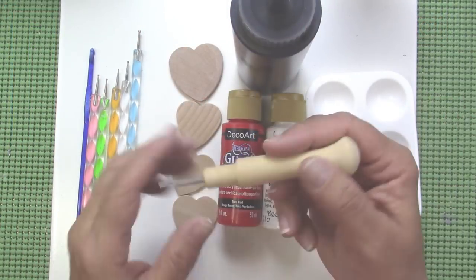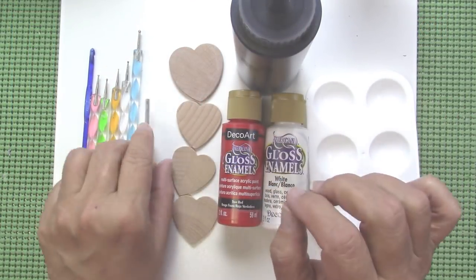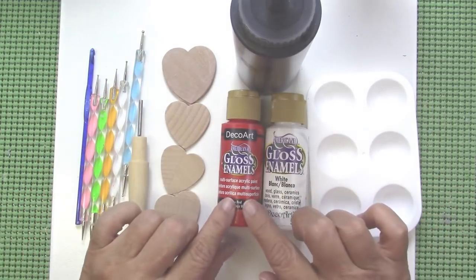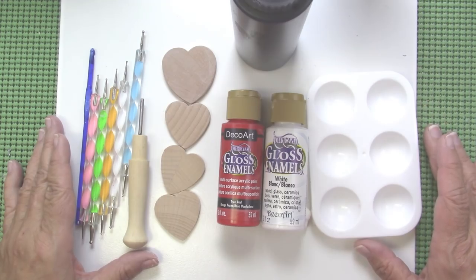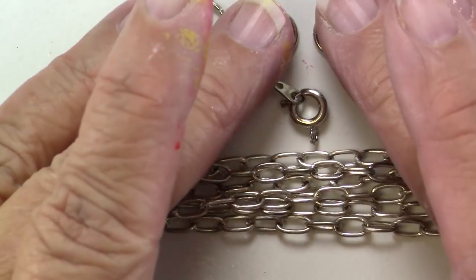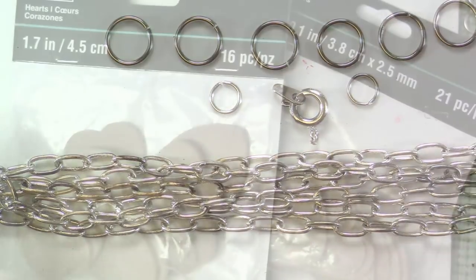The materials we'll use are: I'm going to actually use this drill bit, some wood hearts, gloss enamel paints, chalk paint, and my regular dotting supplies. I'll also be using some chain, jump rings, and a clasp.